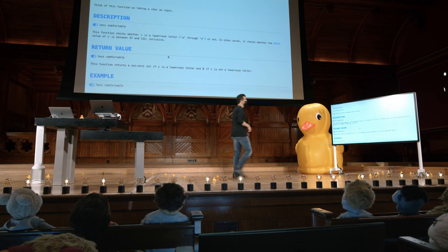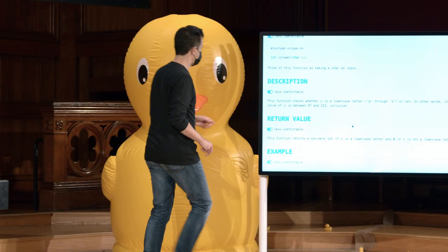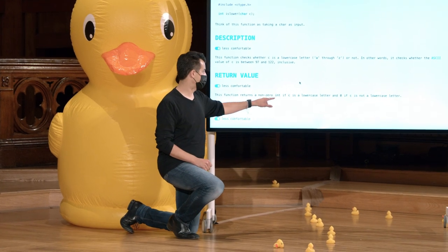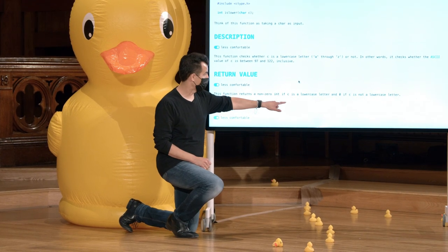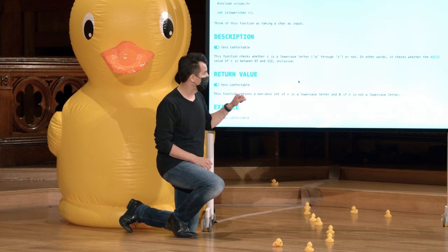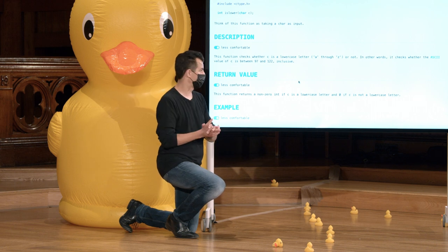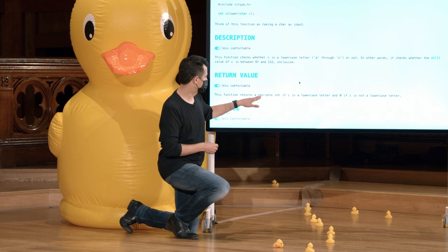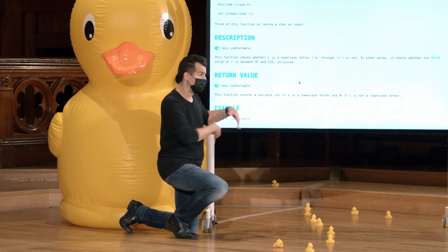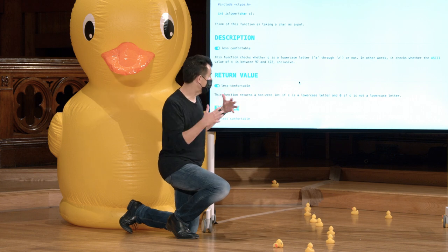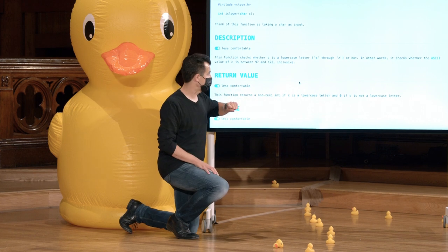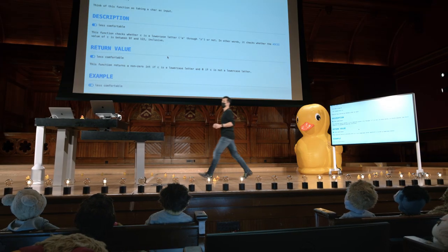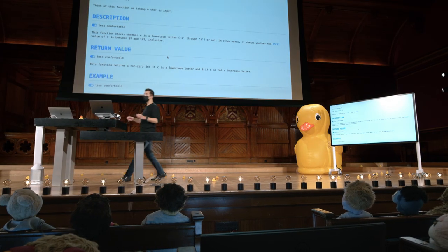Ele retorna — oh, isso é interessante. E esta é uma convenção em C. Essa função retorna um int diferente de zero se c for uma letra minúscula, e zero se c não for uma letra minúscula. Retorna diferente de zero — como um, um negativo, algo que não é zero se c é minúsculo.